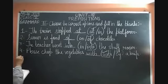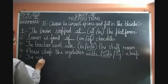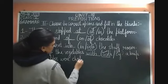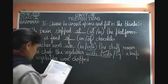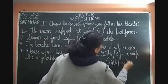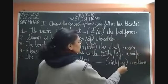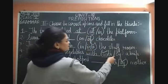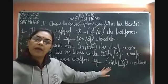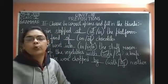Fifth: The vegetables were chopped ___ my mother. Options are 'with' or 'by.' Jo batata hai kis ne kiya — uske liye 'by.' Kis se karna hai — uske liye 'with.' So the vegetables were chopped by my mother — write 'by.'